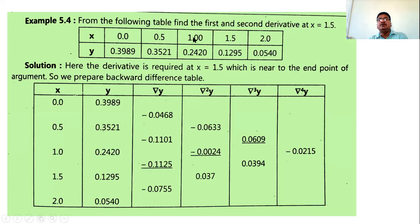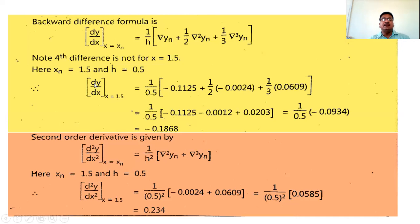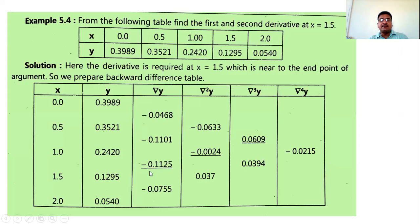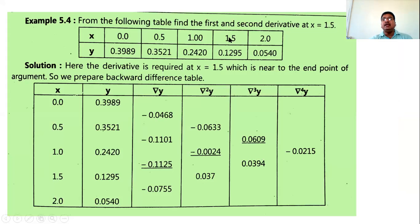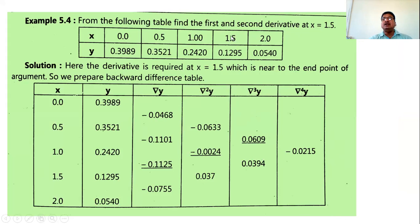With h = 0.5, substitute ∇yₙ, ∇²yₙ, ∇³yₙ from the table — these are the entries corresponding to row 1.5 considered as the last point. After substituting all values, we get the first order derivative at x = 1.5 equal to -0.1868. Even though 1.5 is not the actual last point, we treat it as xₙ and use the backward difference formulas.